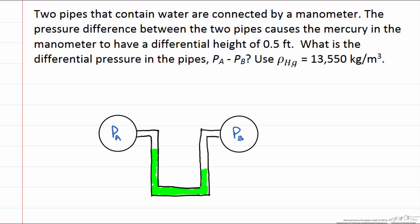So here in green I have my mercury and the only information we are given is that the height difference between the two levels of mercury is 0.5 feet. So I have filled in water in the manometer above the mercury just to help show what it would look like.